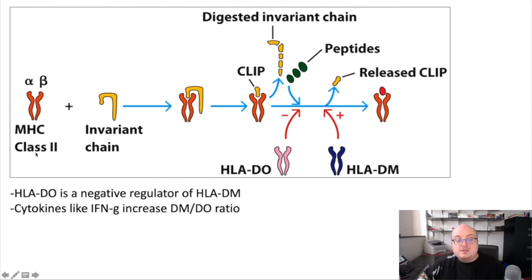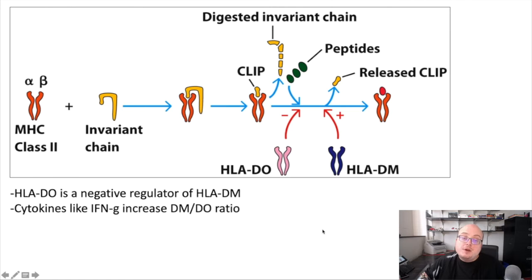We start with MHC class II — we see our alpha and beta chains. If we add the invariant chain, we block the peptide binding groove. Ultimately that becomes digested and leaves behind only CLIP, which prevents binding to peptides. HLA-DM, which was in your textbook figure, is going to promote the release of CLIP from the peptide binding groove, which is going to allow peptides to bind.